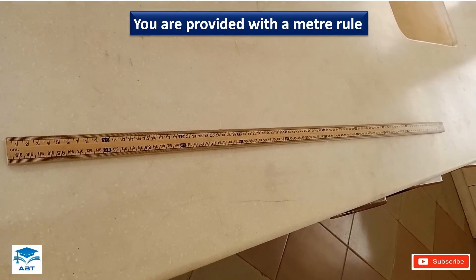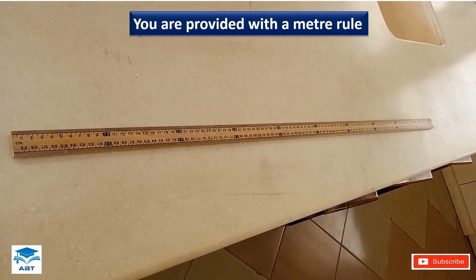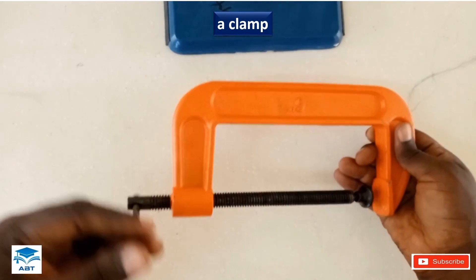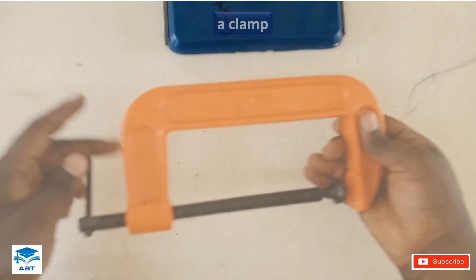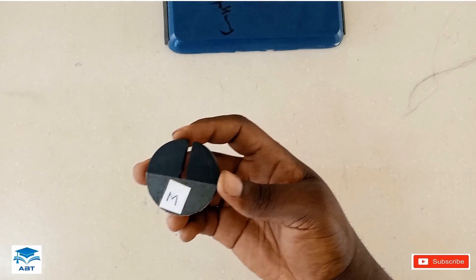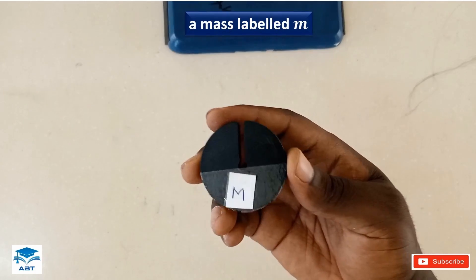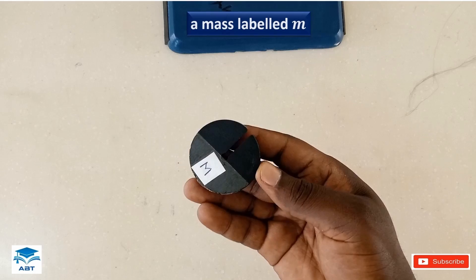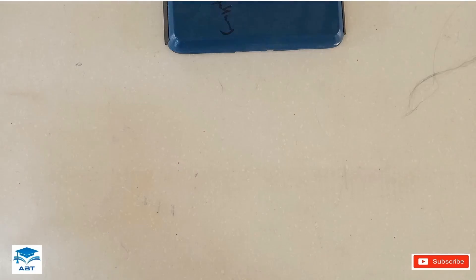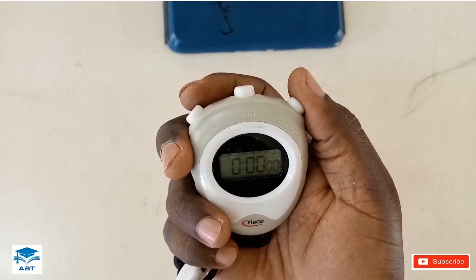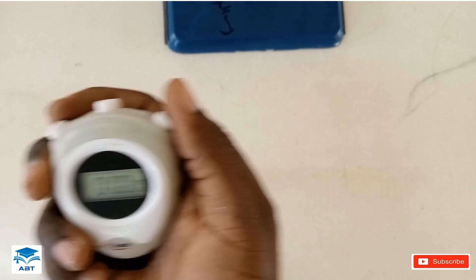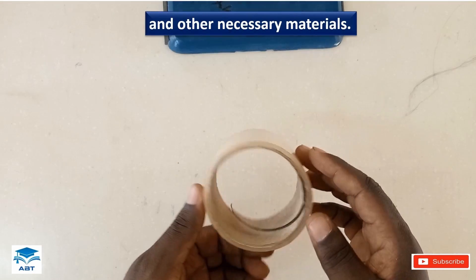You are provided with a meter rule, a clamp, a mass labeled M, a stopwatch, and other necessary materials like the cello tape.